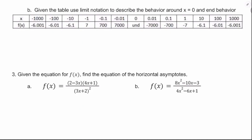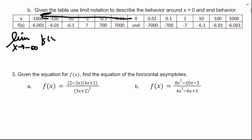On part b, we do the same thing but also analyze the behavior around x equals 0. At x equals 0 we have an undefined situation, and on either side we see really large numbers, so that's probably a vertical asymptote. As x approaches negative infinity, f is approaching negative 6. As x approaches positive infinity, f is again approaching negative 6. So the limit as x approaches positive infinity of f of x equals negative 6.